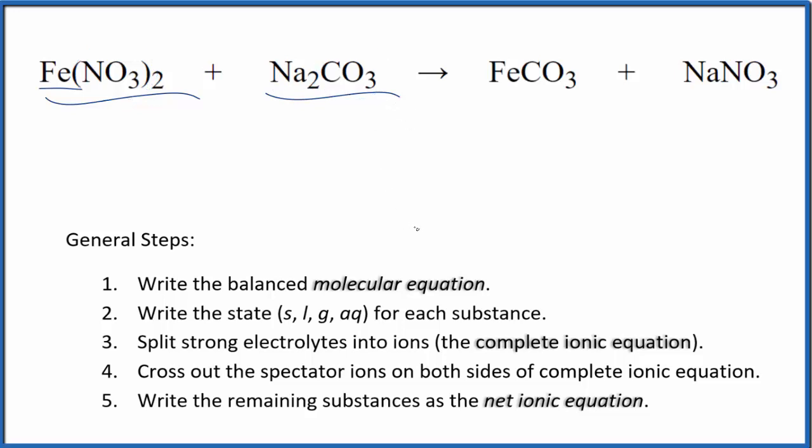So the first thing we do with net ionic equations, we balance the molecular equation. I can see that I have two nitrate ions here and only one over here, so I'm going to put a 2 in front of the sodium nitrate. I have two sodiums, two sodiums here, that's good. I have a carbonate and a carbonate, those are balanced, and an iron and an iron. This is the balanced molecular equation.